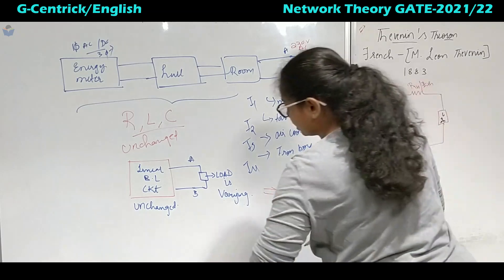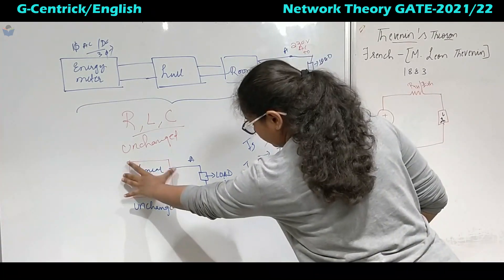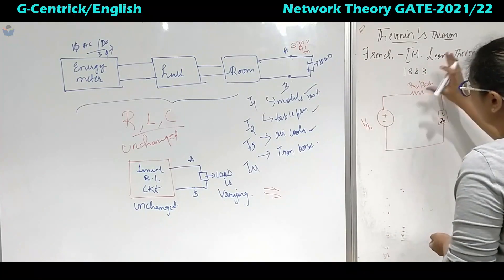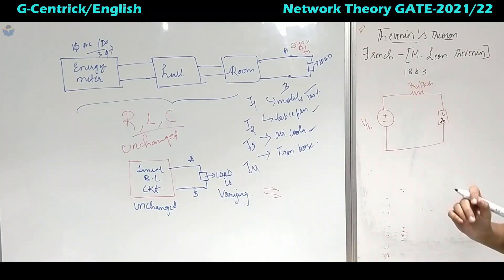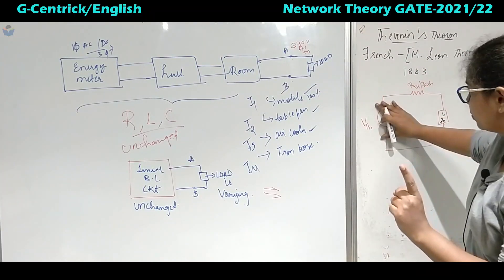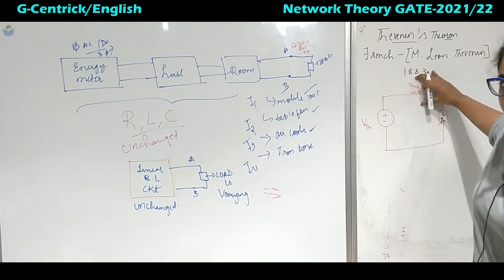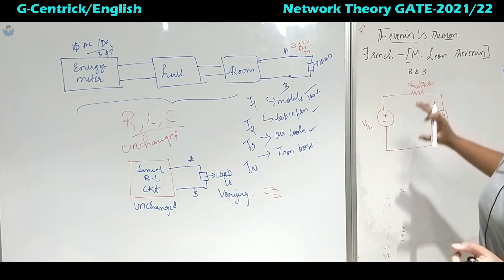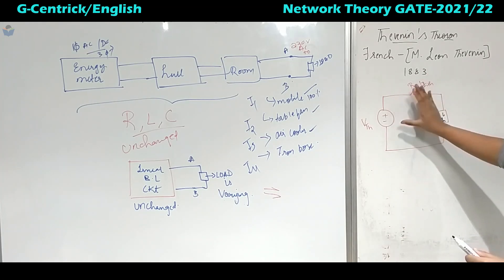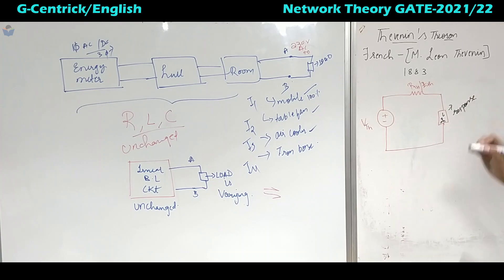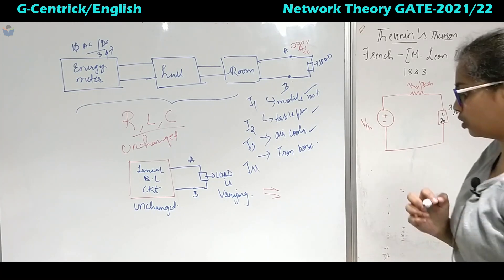This will be equivalent and then the load. He gave here the load. What he did, everything that is related here in the linear bilateral circuit he replaced it with V thevenin and R thevenin. One equivalent voltage source, it can be either DC or AC, and one equivalent resistance or impedance. He replaced it with one of them and then he connected this load because from here it will be very easy to calculate the response. This was about the Thevenin's concept.